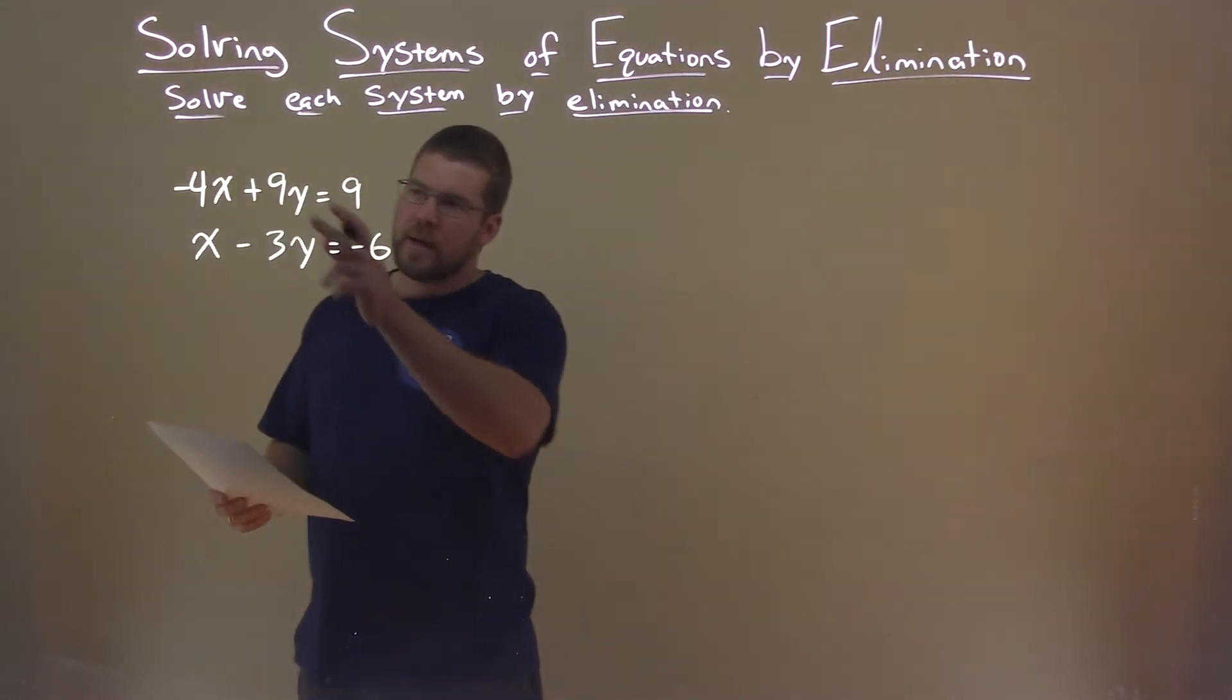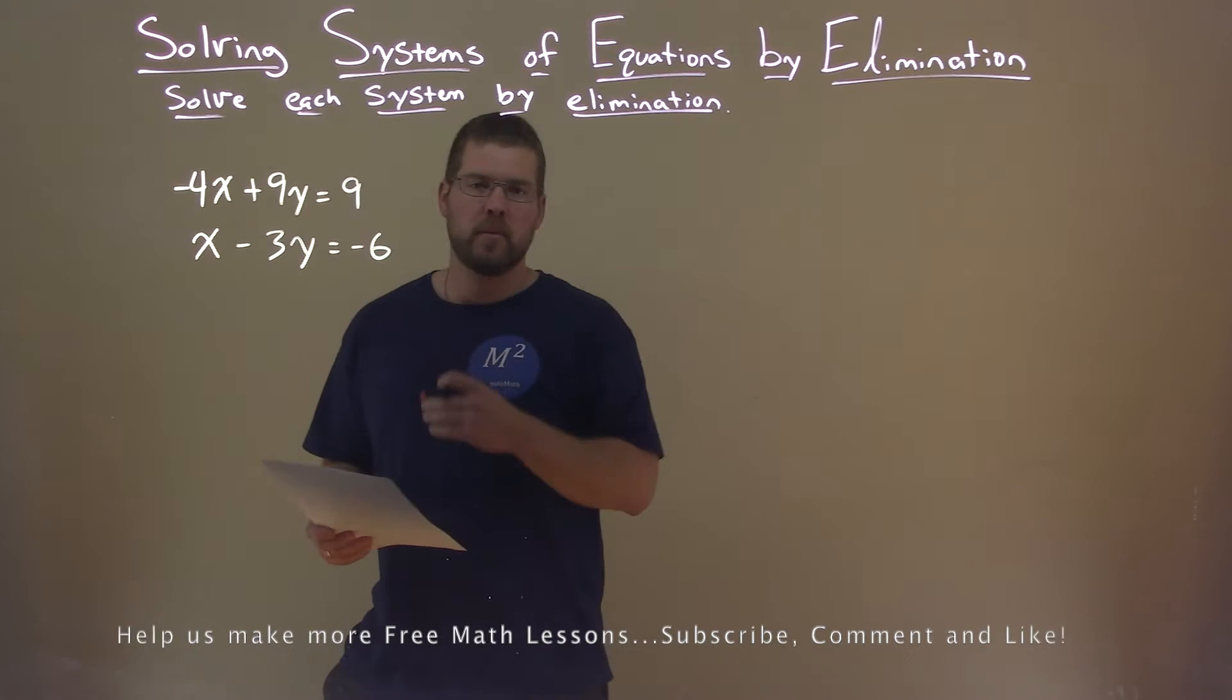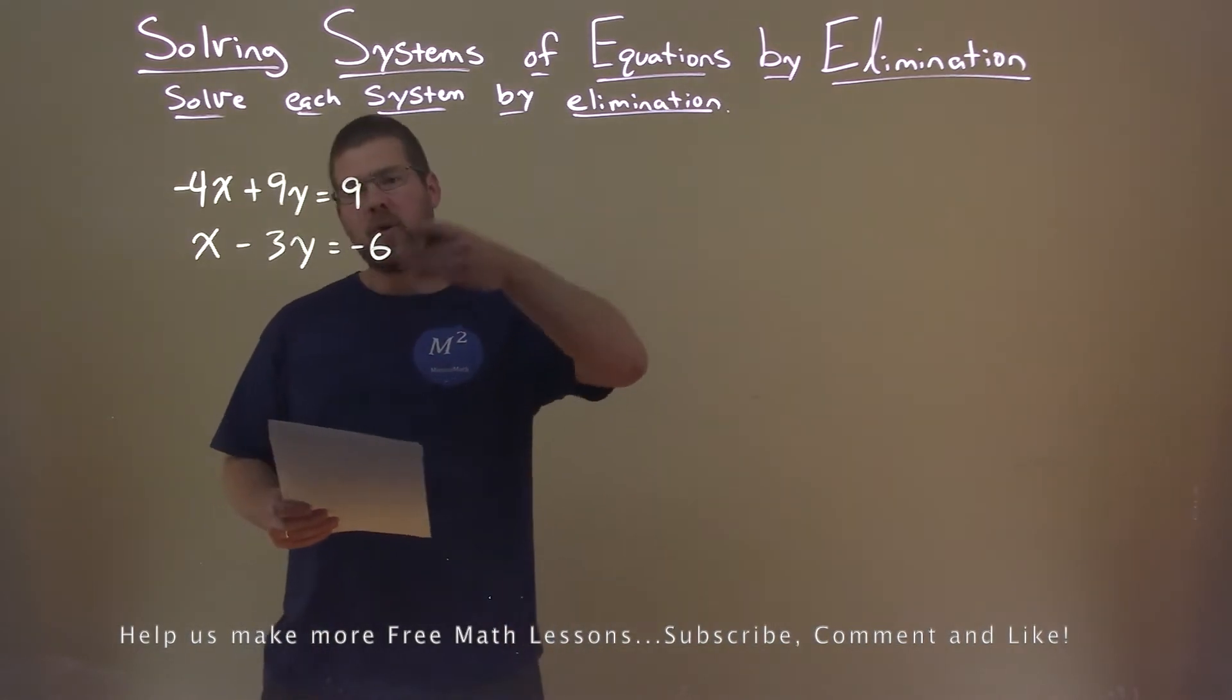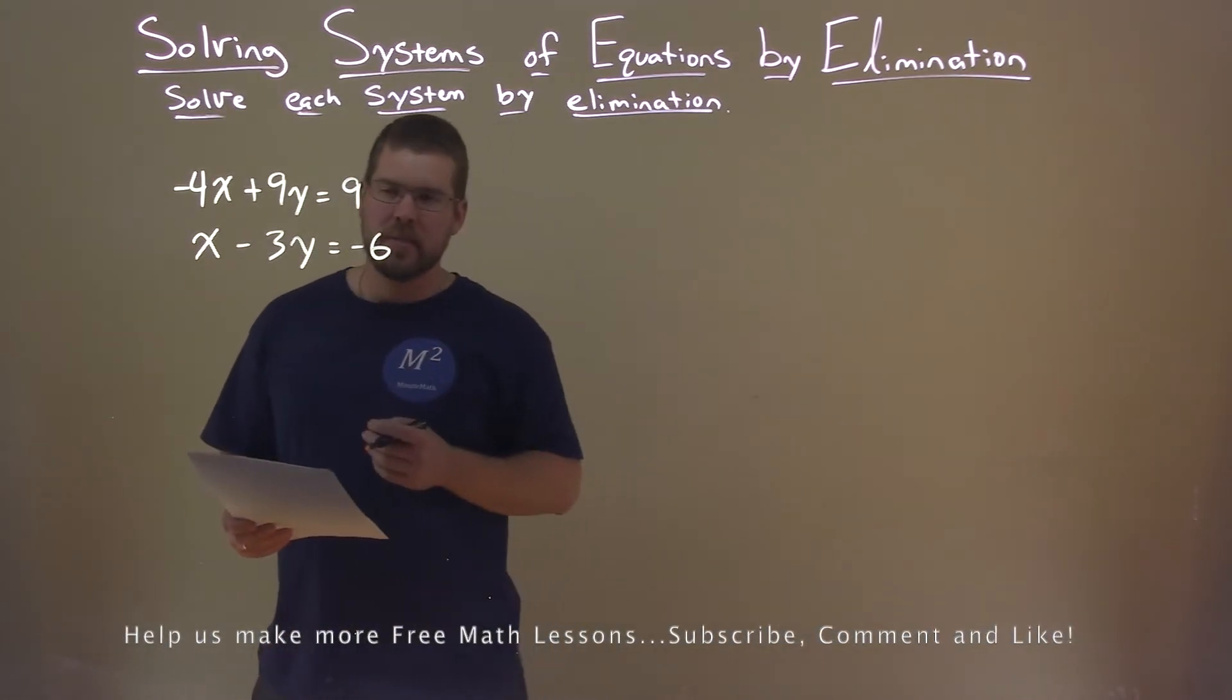We're given this problem: negative 4x plus 9y equals 9, x minus 3y equals negative 6, and we have to solve this by elimination.